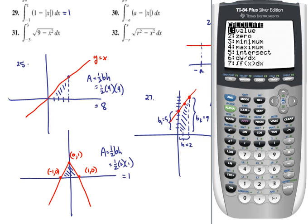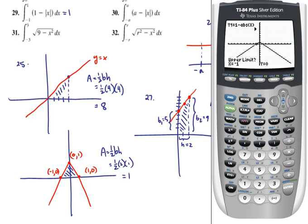And then we're going to 2nd and trace, option 7. My lower limit is negative 1, the upper limit is positive 1, it graphs it in at 1.